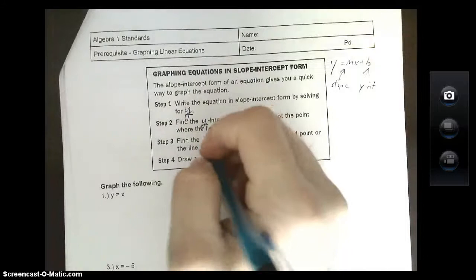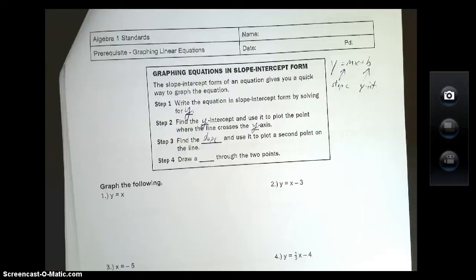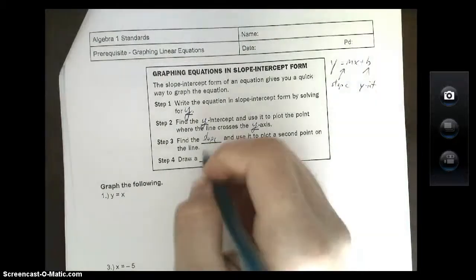Step 3: Find the slope and use it to plot a second point on the line. All you need to graph a line is two points. Once you have two points, you can construct a line. Finally, Step 4: draw a line through the two points.